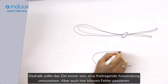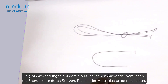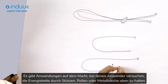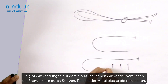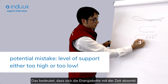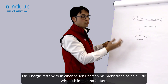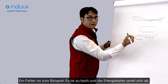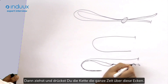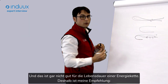The target should always be to realize the application self-supporting, so that the upper run is in the air. There are applications in the market where users try to keep it up with supports, rollers at certain distances, or with metal sheets. But what's really difficult here is finding the right level to keep the chain up. Over time the chain will come down and change position — it will never stay the same. A bad case is when it's too high and the chain comes down, so you end up pulling and pushing it over these edges. Even with rollers it's a bit better, but you're still pulling something over something, which is never good for the lifetime of an energy chain.